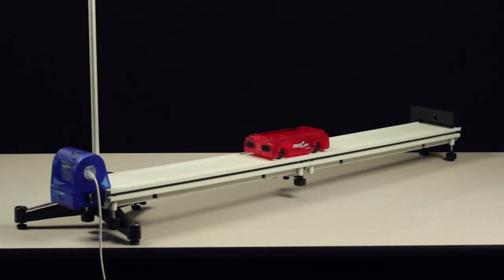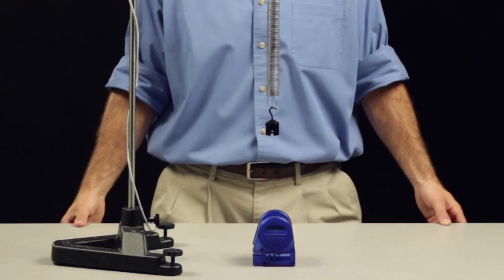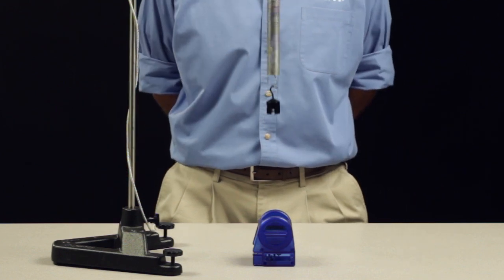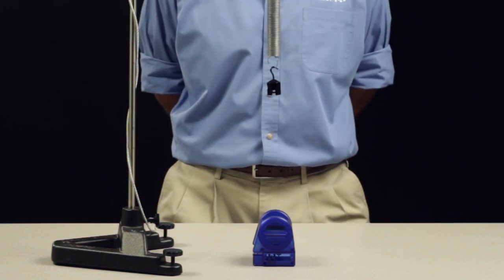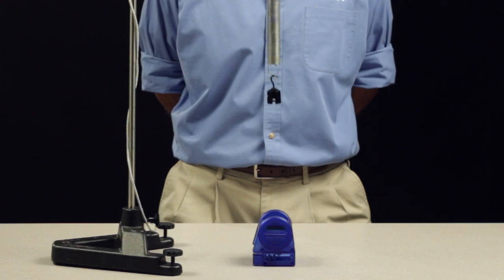Given the time it takes the pulses to make a round trip and the speed of sound in air, the sensor can indirectly measure the distance or position between itself and the target object. The sensor then uses subsequent position measurements to determine the target object's velocity and subsequent velocity measurements to determine its acceleration.